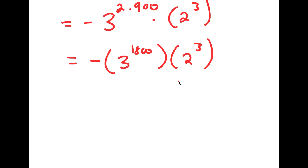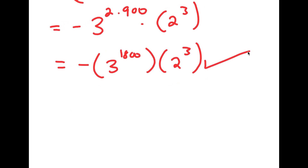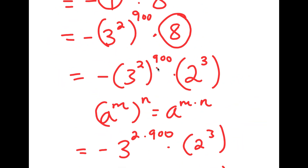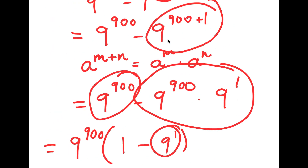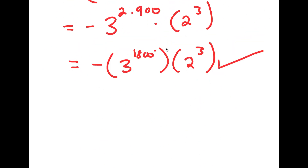So this is our answer in its most simplified form. If you want, you can try putting in 3 to the power of 1800, but that number is way too big for any calculator to actually output. This is the simplest form we can put our answer in — that is our answer to 9 to the power of 900 minus 9 to the power of 901.